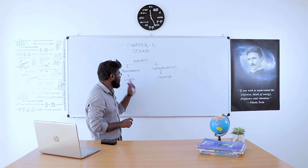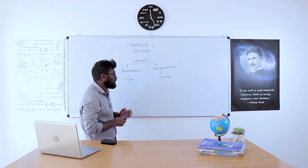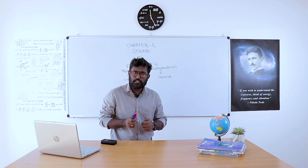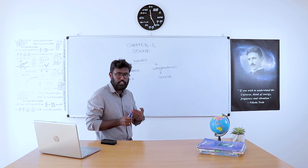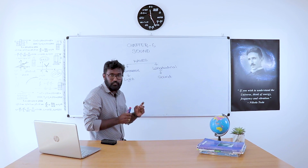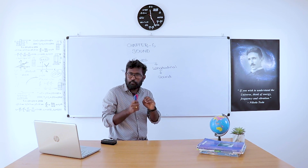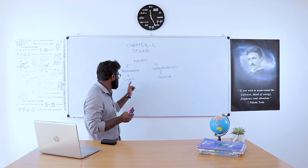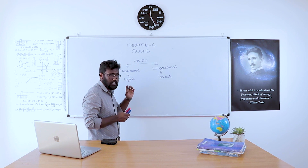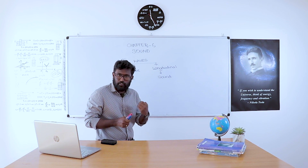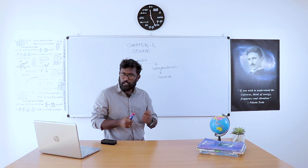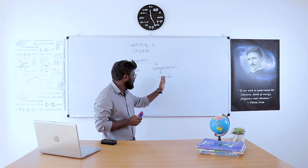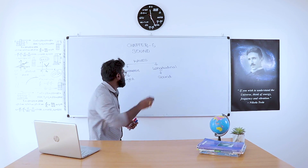When a wave is traveling through the medium and the particles of the medium vibrate perpendicular to the direction of propagation of the wave, then the wave is called a transverse wave. Light wave is an example of transverse wave. When the particles vibrate parallel to the direction of propagation of the wave, then the wave is called a longitudinal wave, and sound wave is an example.